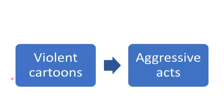We could graphically illustrate this experiment by using a path diagram. In a path diagram, you put the variables in boxes. The IV is in a box, the DV is in a box, and you have an arrow indicating the relationship or lack of relationship between the variables. Here we have: violent cartoons cause aggressive acts. This is a very simple path diagram because there are only two variables.